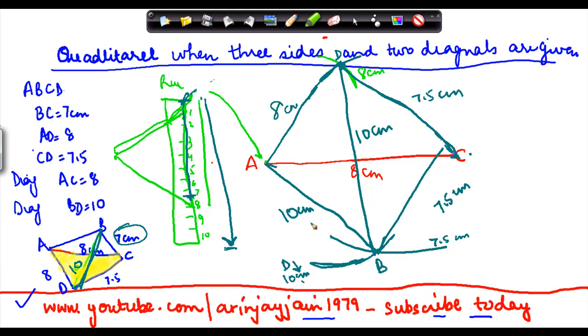Using this, I can estimate what is the length of AB. I can use a ruler to find out what is the length of AB. So this is how you construct a quadrilateral when three sides and two diagonals are given.